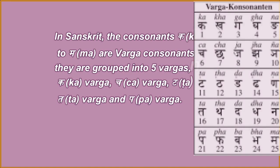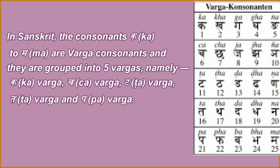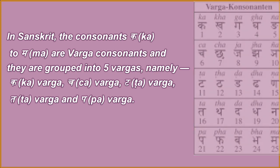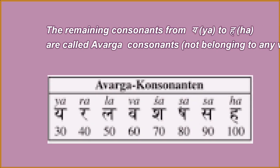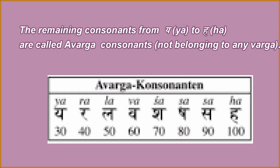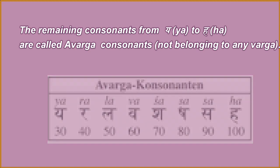In Sanskrit, the consonants Ka to Ma are Varga consonants and they are grouped into five Vargas, namely Ka Varga, Cha Varga, Ta Varga, Ta Varga and Pa Varga. The remaining consonants from Ya to Ha are called Avarga consonants, not belonging to any Varga.